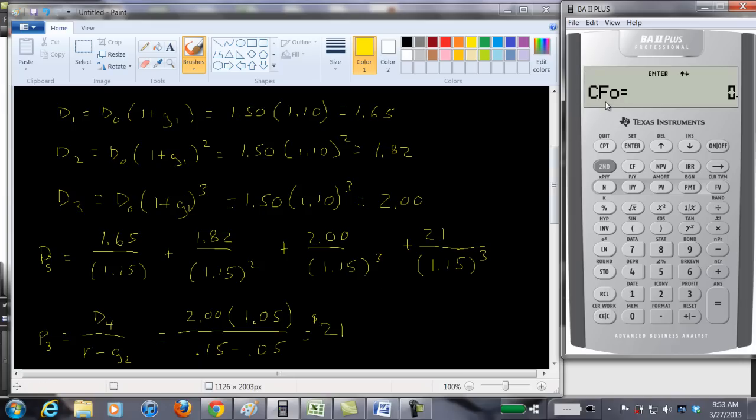The first cash flow is $1.65. Okay, don't forget to hit enter. And there's just one of those, so leave frequency at one. The second cash flow is $1.82. Enter. And again, there's just one of those.